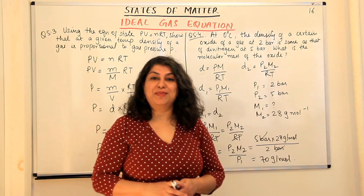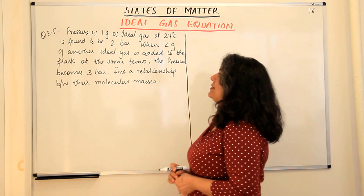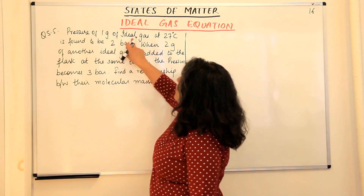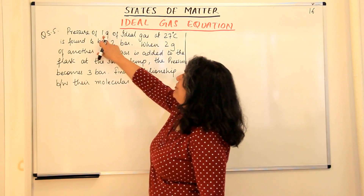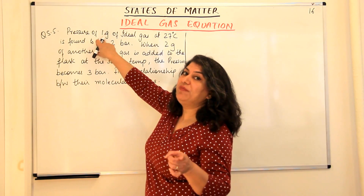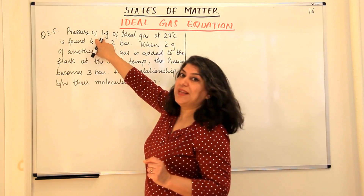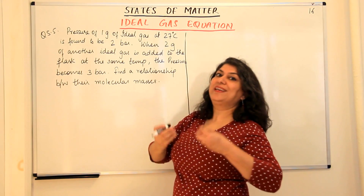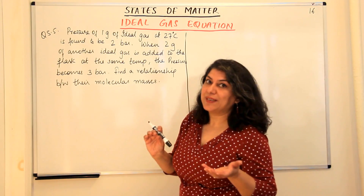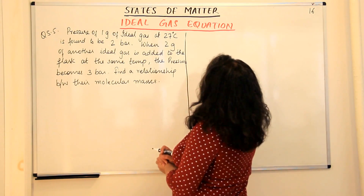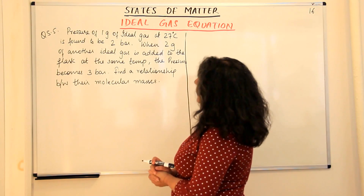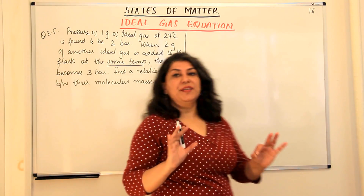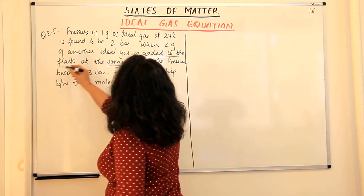Let us now solve one more numerical problem. This is question 5.5 of your exercise. The question reads: the pressure of 1 gram of an ideal gas at 27 degrees Celsius is found to be 2 bar. Temperature is given and mass is given. When we use the ideal gas equation PV = nRT, for n we will use m/M — small m is given, capital M is the molecular mass. When 2 grams of another ideal gas is added to the flask at the same temperature — same temperature means T is constant, added to the flask means V is constant.